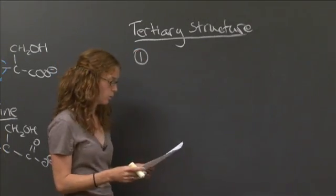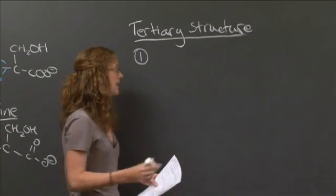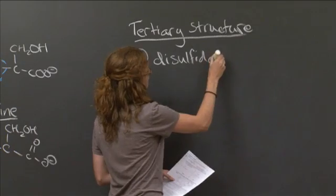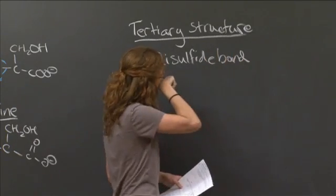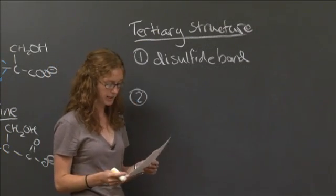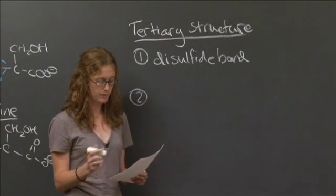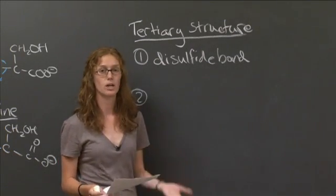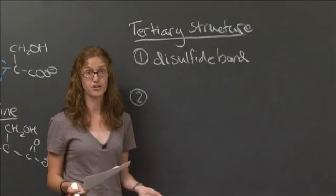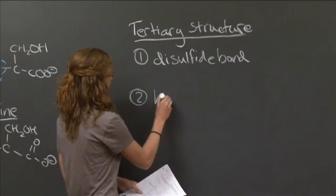If we look at number one, we see that it has two sulfur atoms connected together, so we call that a disulfide bond. For the second part, we see that we have a phenyl group with a very electron-deficient hydrogen interacting with a deprotonated carboxy oxygen anion. So we have a hydrogen bond there, and that's what's causing those amino acids to be pulled together.